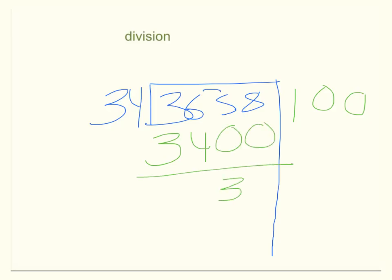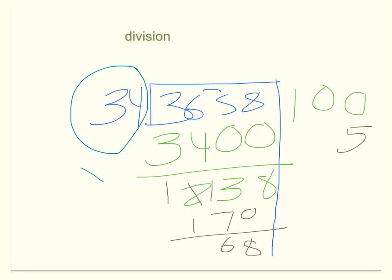We subtract. We have that left. We pick another number. Subtract again. So we have 68. And I know that 34 times 2 is 68.